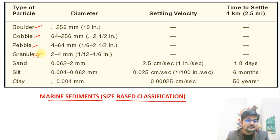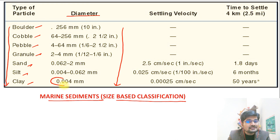From boulder to clay, the diameter is in decreasing order. The smallest diameter is clay and the biggest is boulder. So in decreasing order of diameter size: boulder, cobble, pebble, granule, sand, silt, clay — which you can remember as B, C, P, G, S, S, C.